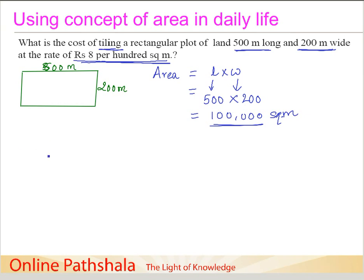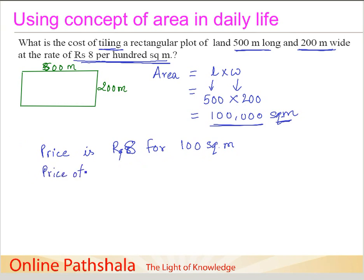Now there is an issue. The price given is rupees 8 for 100 square meters. So we need to find out the price for tiling 1 square meter, which we get by dividing: the price of tiling 1 square meter is rupees 8 divided by 100.